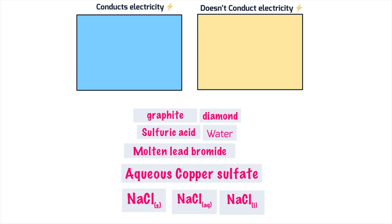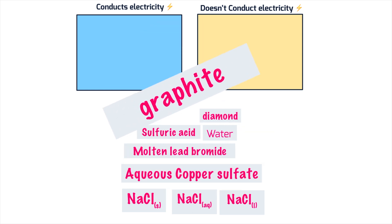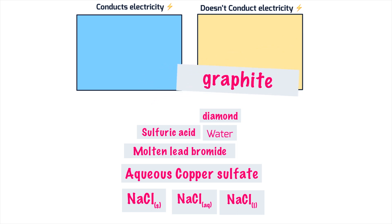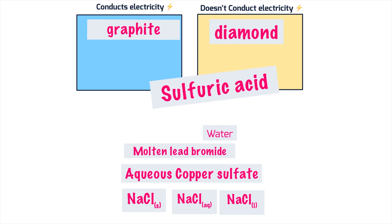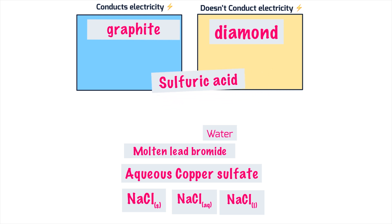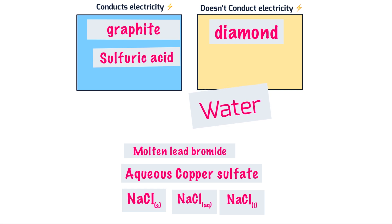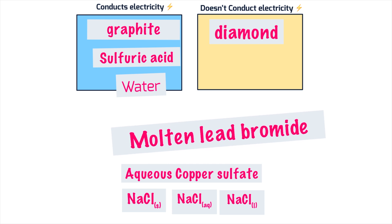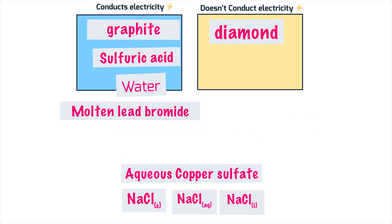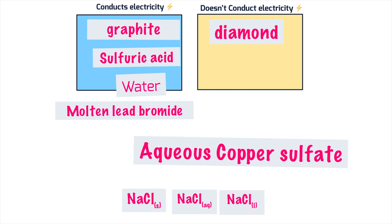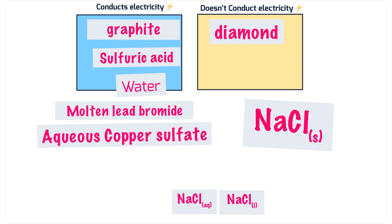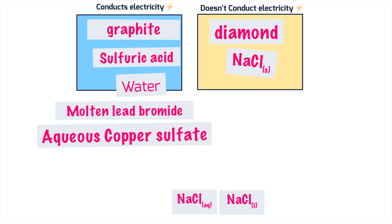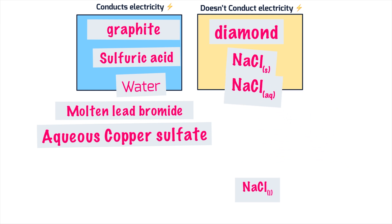Let's look at some examples to determine whether substances conduct electricity. Graphite conducts because it has free electrons. Diamond is the opposite — it doesn't have free electrons. Sulfuric acid and other acids have free mobile ions, so they conduct. Water conducts because it has positive hydrogen ions and negative hydroxyl ions. Molten ionic compounds conduct very well. Aqueous ionic compounds also conduct. Solid NaCl does not conduct, but aqueous NaCl does, and molten NaCl (marked 'l' for liquid) also conducts.